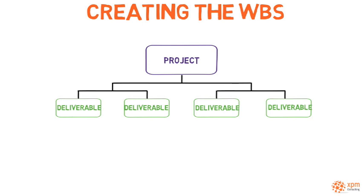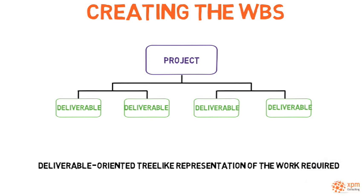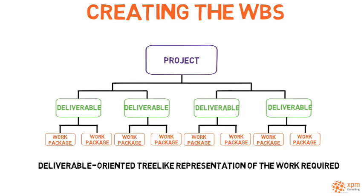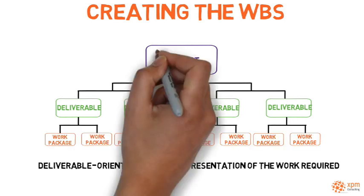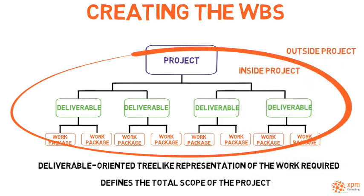The team can produce the work breakdown structure once the scope is defined. A WBS is a deliverable-oriented, tree-like representation of all the work required to achieve the project objectives. Technical and project management deliverables identified in the scope statement will be progressively decomposed into smaller and more manageable work packages. A WBS defines the total scope of the project — work that is not in the WBS is outside the scope of the project.